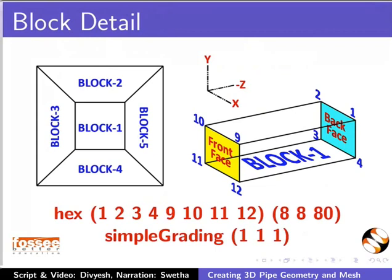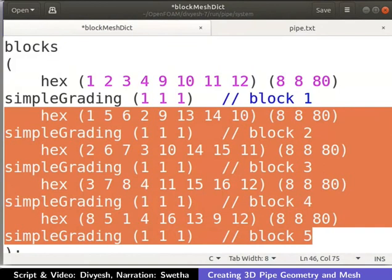To generate 3D mesh, we are using 8 cells in x-direction, 8 cells in y-direction, and 80 cells in z-direction. Other 4 blocks are defined in the blockMeshDict file as shown.